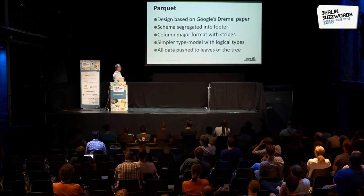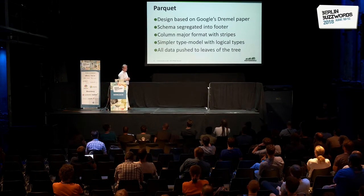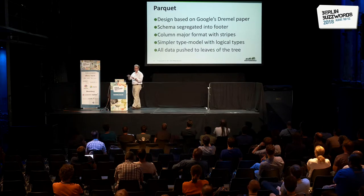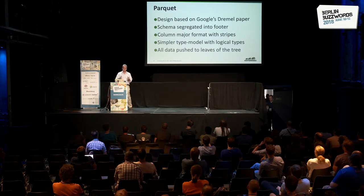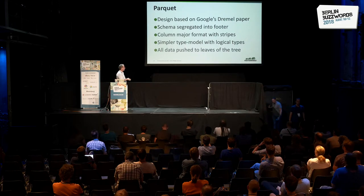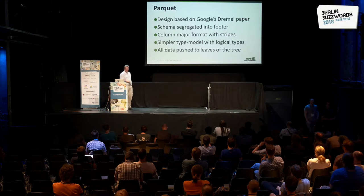In Parquet, all data is pushed to the leaves of the tree. So for intermediate columns — structures or lists of structs — all that information is pushed to the leaves. You gain some advantages, but there is some duplication there.